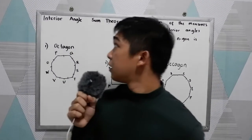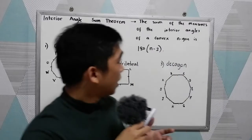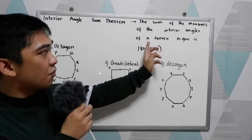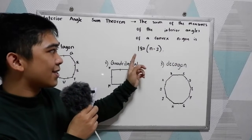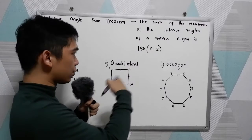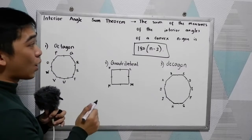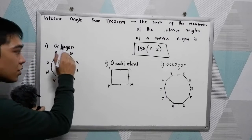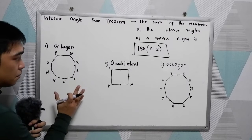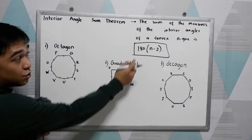We also have the Interior Angle Sum Theorem. The sum of the measures of the interior angles of a convex n-gon is 180 quantity n-2. So if you're going to find what is the sum total of the angles in our polygon, then we're going to use this formula.